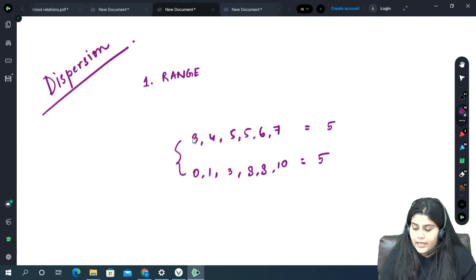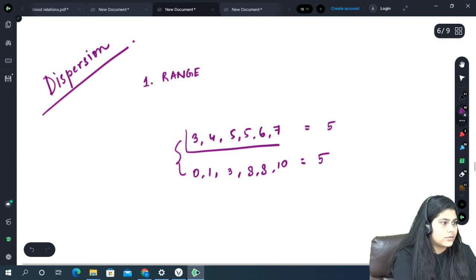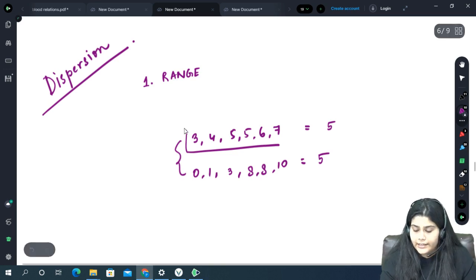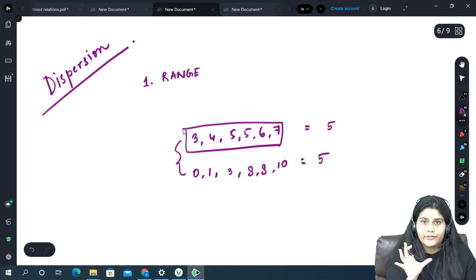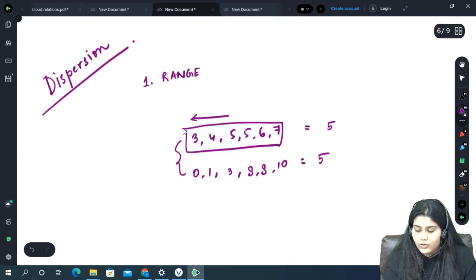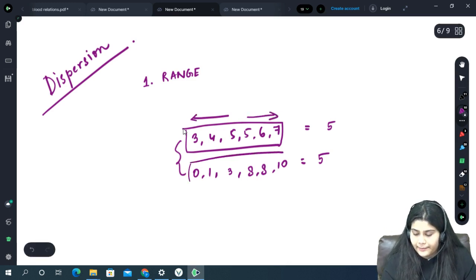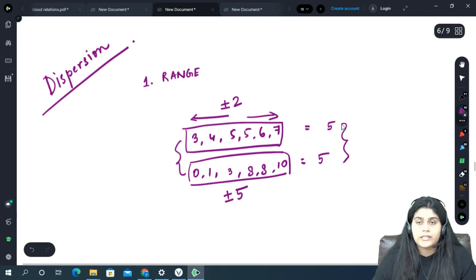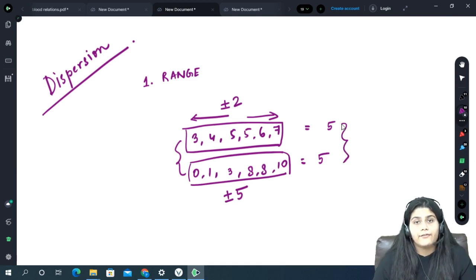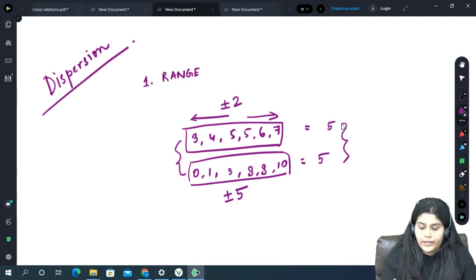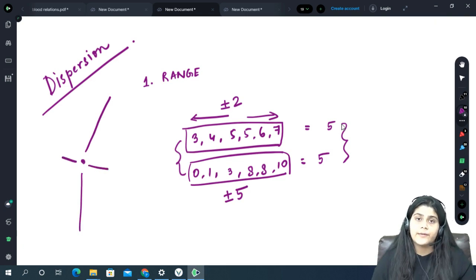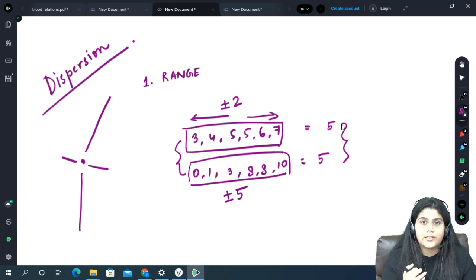How much difference between both data? The first data set is very concentrated near 5, maximum 5 के just 2 units plus minus. But the second data set is plus minus 5 units, which means if someone asks about both, you will say 5 but they will not know how much spread across 5 is. 5 is just the central point, how far or how close? For this we use measures of dispersion.